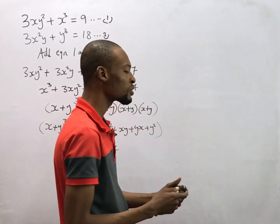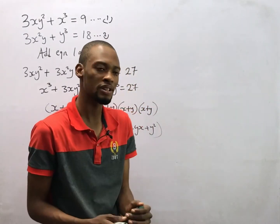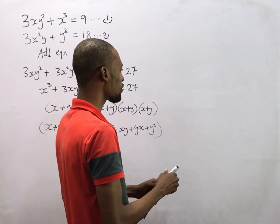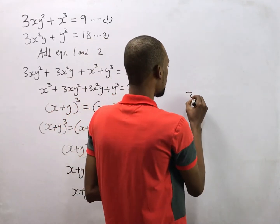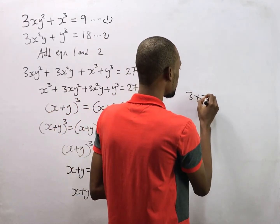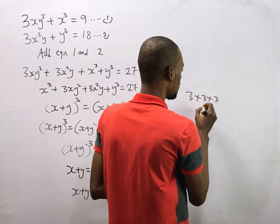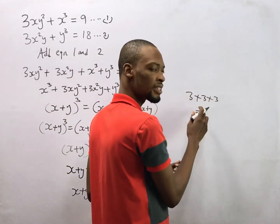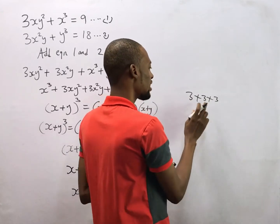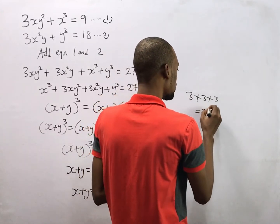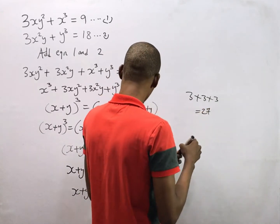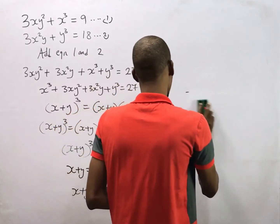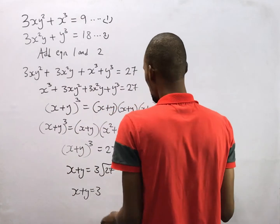Cube root means something you multiply three times to get 27. So 3 × 3 × 3: 3 times 3 is 9, and 9 times 3 is 27. So the cube root of 27 is 3.